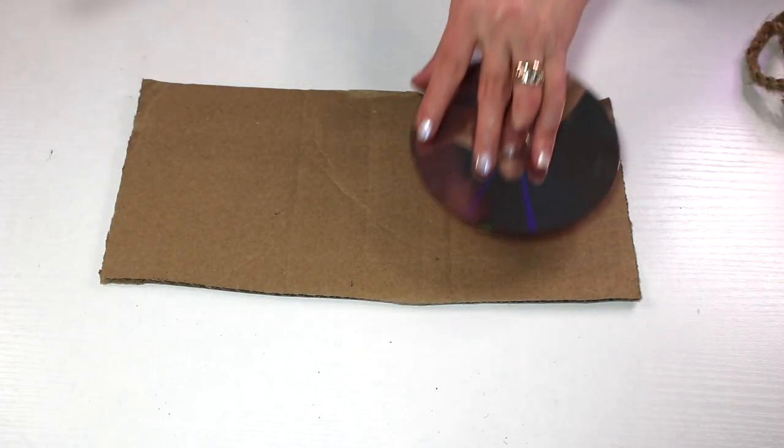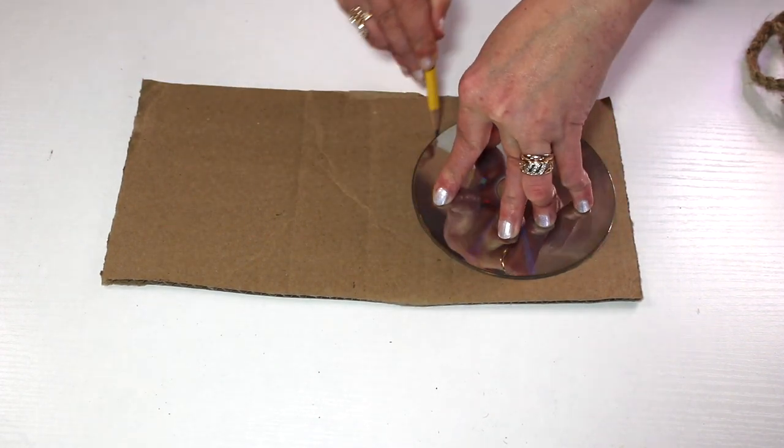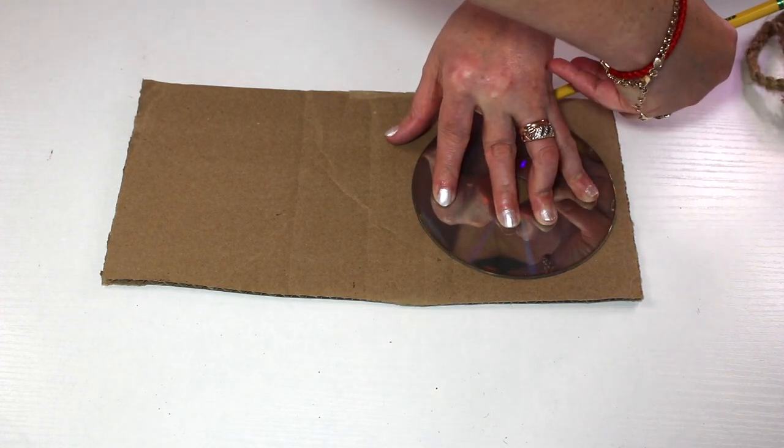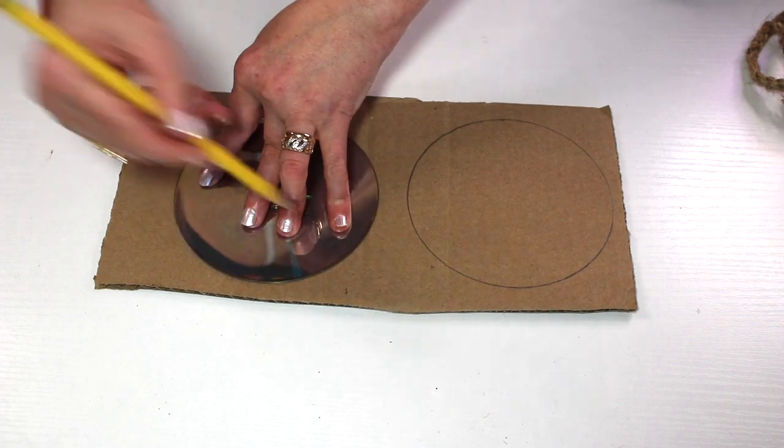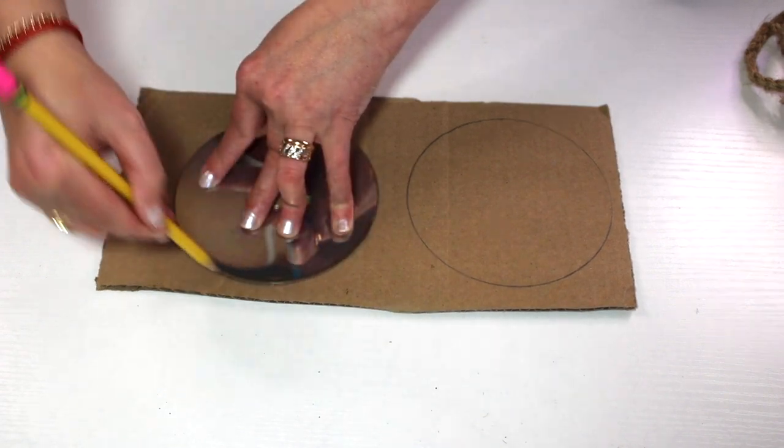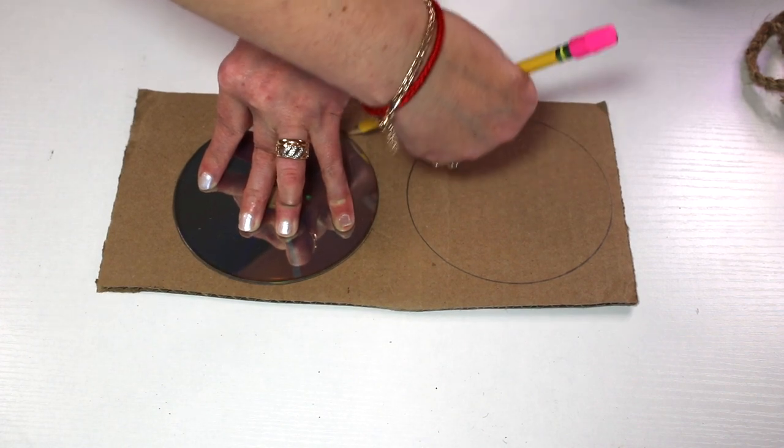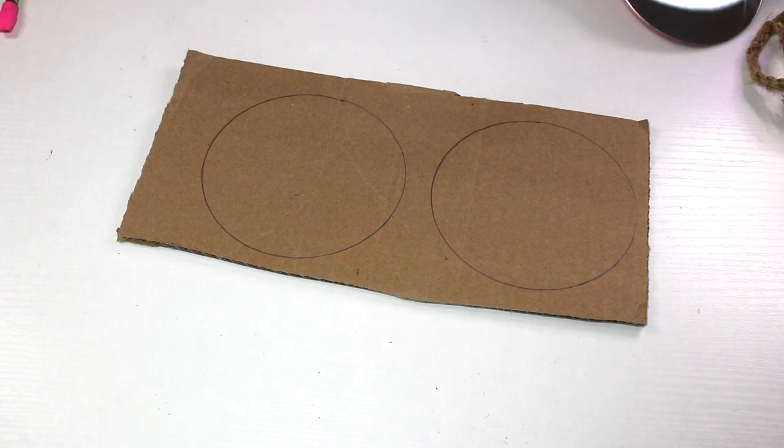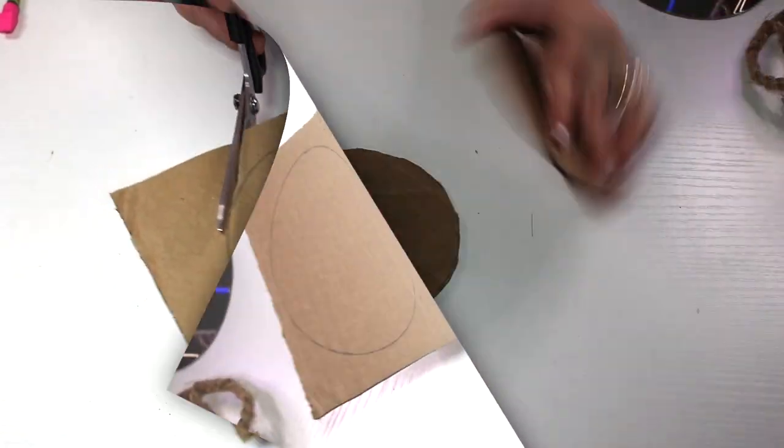Alright, so we will take an old CD and a cardboard. This is a lid from an Amazon package that I received, so I just cut pieces of cardboard out of there. You outline two circles and then use your scissors to cut them out. What I did for it to be a little bit thicker, I glued them one on top of each other.